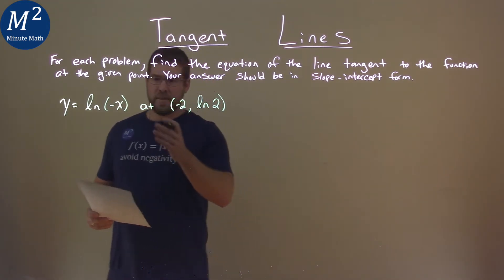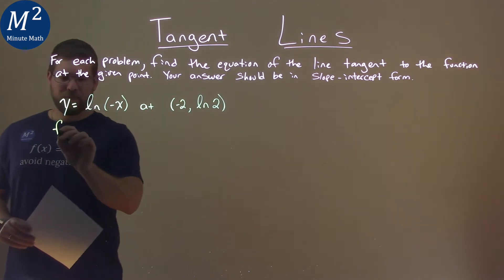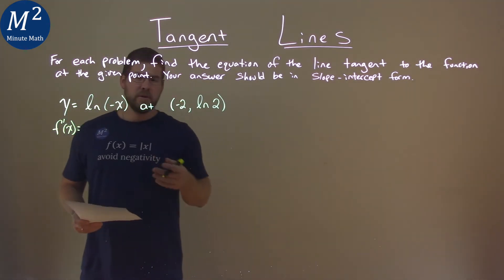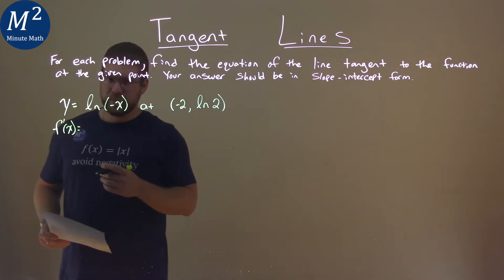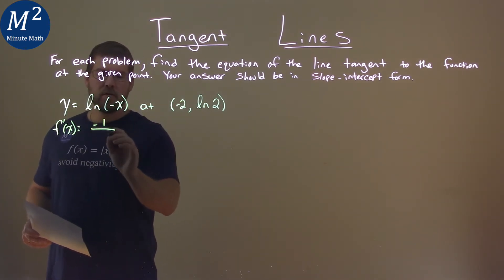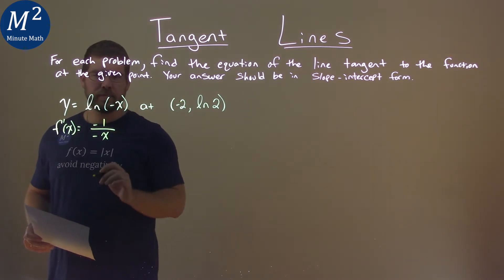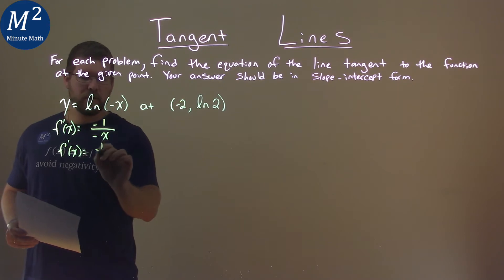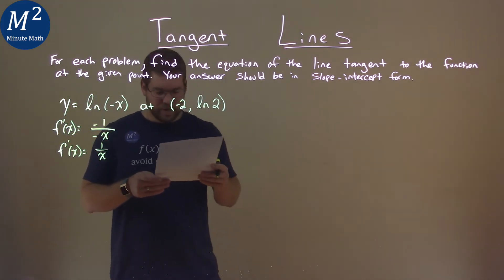Well, first thing I want to do is find the derivative of our function. Let's call it f prime of x. And the derivative of a natural log of u is u prime over u. So the derivative of the inside of negative x is a negative 1 over the inside, which is a negative x. Well, get rid of the negatives, and f prime of x here is just a 1 over x. Pretty simple there.